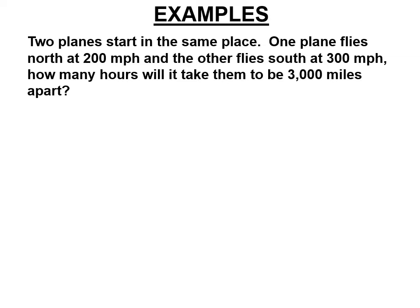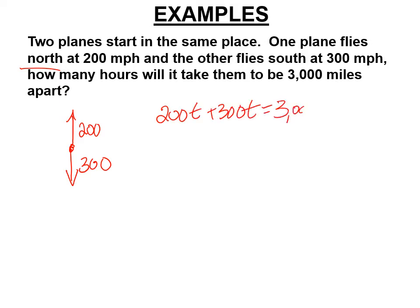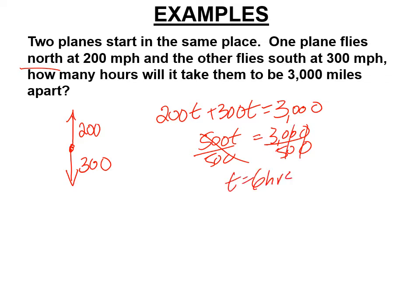This works with trains, planes, and cars as long as they're going in opposite directions. One plane flies north at 200 miles per hour, the other flies south at 300 miles per hour — those are our two rates. So 200t plus 300t, and we want to know when they're 3,000 miles apart. Combine our like terms for 500t, divide both sides by 500, cross out some zeros, and t equals 6 hours.